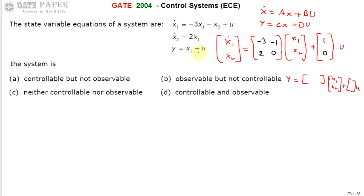Y = x1, so there is no x2 term and a U term is present. This gives C matrix as [1, 0] and D matrix. So now we have matrix A = [−3, −1; 2, 0], matrix B = [1; 0], C = [1, 0], and D.